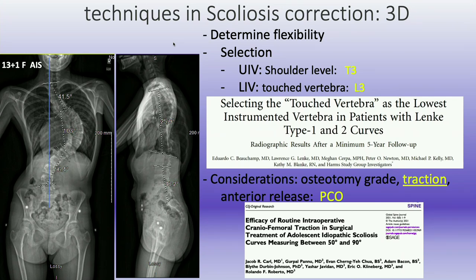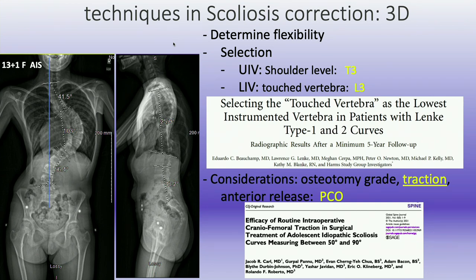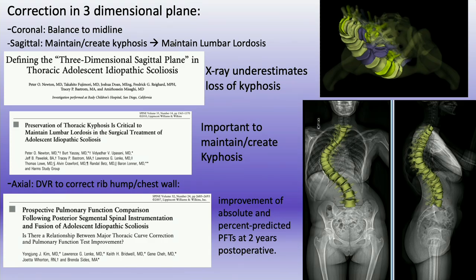We routinely do posterior column osteotomies, and we've been doing this more aggressively at multiple levels — kind of like a grade one and a half. We haven't been doing the superior articular facet release completely, as it gives a little potential for neurologic changes and bleeding. We do use halo-femoral traction for the larger curves, and head traction for medium-sized curves — we've published on this. It probably makes our releases and surgical time a little bit better.